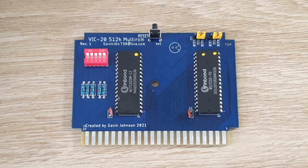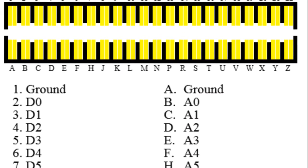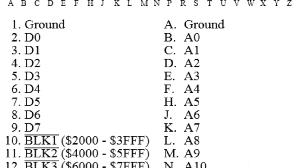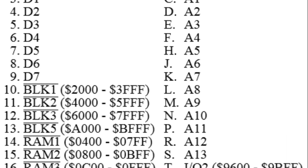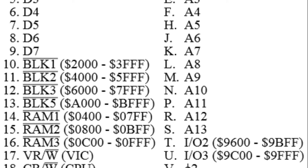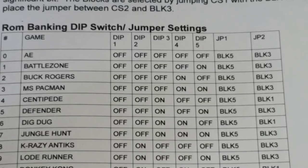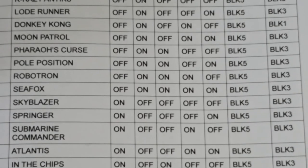The left jumper is used to select which block IC1 uses. The right jumper is used to select which block IC2 uses. The VIC-20 cartridge port has address lines A0 to A13, allowing for 14 address bits to be added to the bus. Pins 10, 11, 12, and 13 can be inverted for chip select, meaning the cartridge can select from up to 16K of memory space. The DIP switches allow you to manually select which 16K bank is visible to the bus.